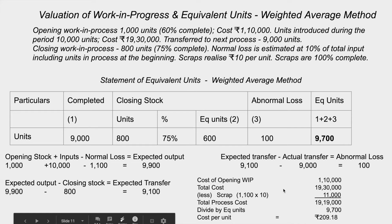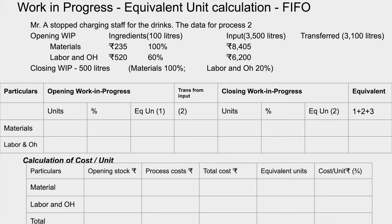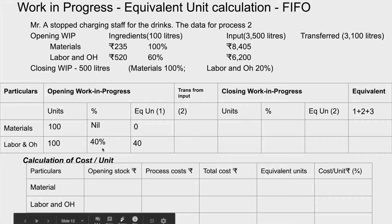Now a second problem. Opening work in progress: 100 liters; materials 100% complete, labor 60% complete. Input: 3,500 liters; transfer to next process: 3,100 liters. Under FIFO method, we separate opening WIP from current process. For opening WIP: materials are 100% complete, so no additional material cost. Labor is 60% done, so 40% labor remains — 40% of 100 liters = 40 equivalent units for labor.